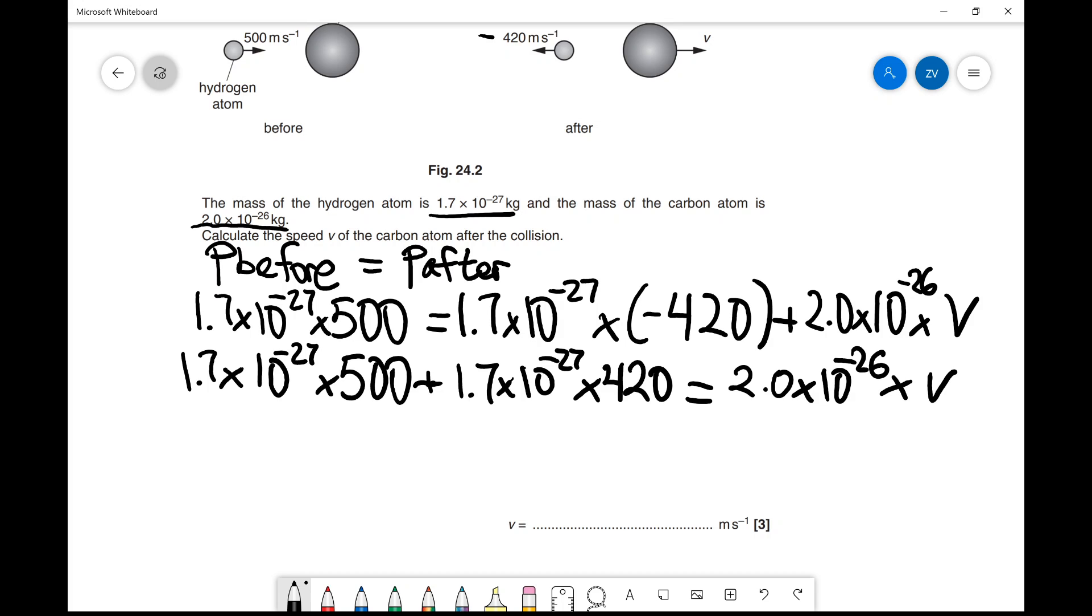Putting the left-hand side into a calculator gives 1.564 × 10^-24, which we set equal to the right-hand side.